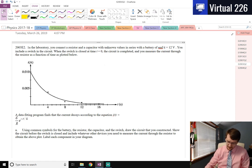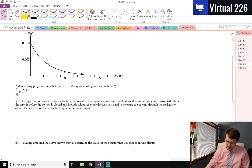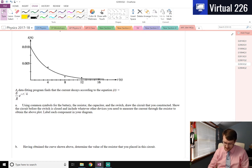A data fitting program finds that the current decays according to the equation I of T equals epsilon over R times E to the minus T over 4.